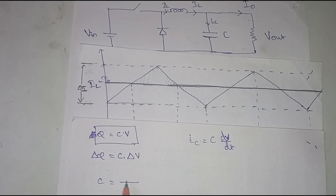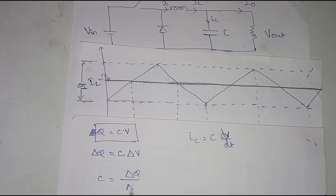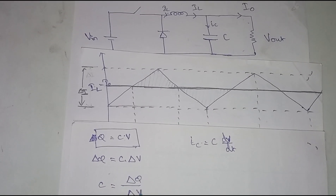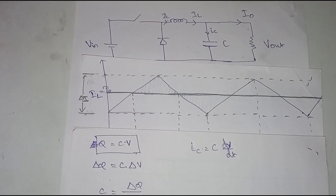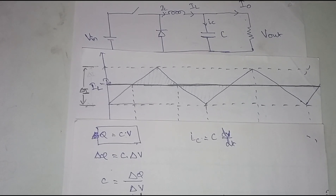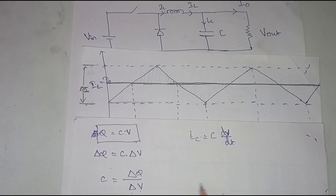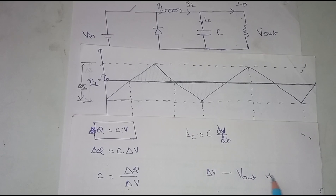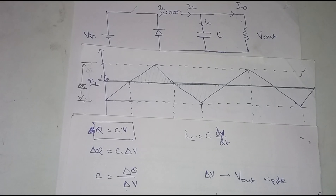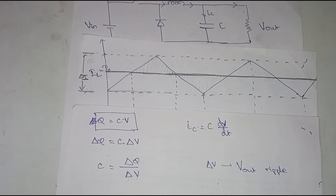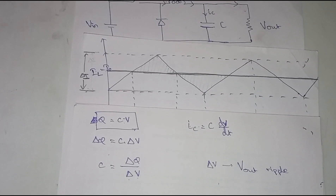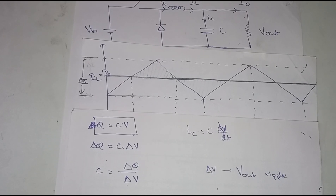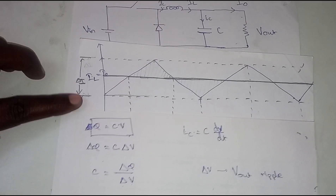Rearranging the equation gives C = ΔQ / ΔV. We need to find ΔQ and ΔV. The ΔV is simply the output ripple voltage — the Vout ripple. This value can be obtained from the DC-DC converter specification. For example, if it is a 5V output, the acceptable range might be 4.5V to 5.5V.